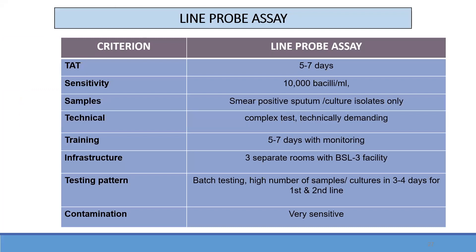In synopsis, the line probe assays differ from Expert and CBNAT in several ways: they take five to seven days, sensitivity is about 10,000 bacilli per ml, and samples must be smear-positive sputum or culture. It is a complex, technically demanding test requiring five to seven days of training. Infrastructure requires three separate rooms with BSL-3 facilities. Testing is done in batches with a high number of samples, and contamination risk is very high.